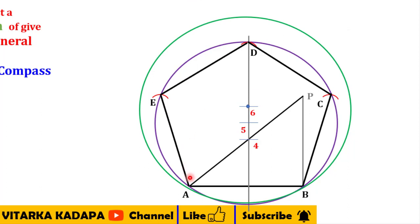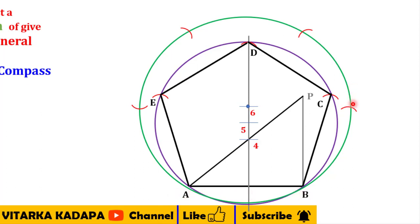Now take the distance from A to B on the compass. With center B and radius AB, cut an arc on the green circle — the green circle is the one we are using for the hexagon. From each successive point, cut an arc with the same radius, continuing around the circle. Totally we get six points: one, two, three, four, five, and six.